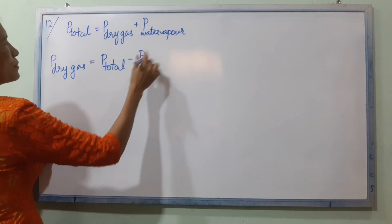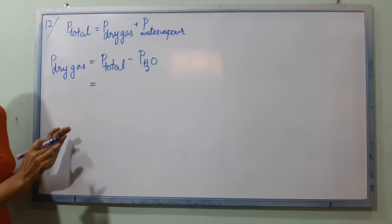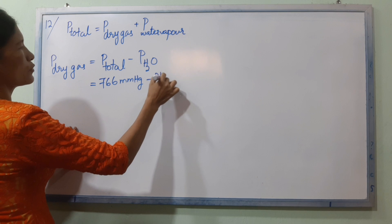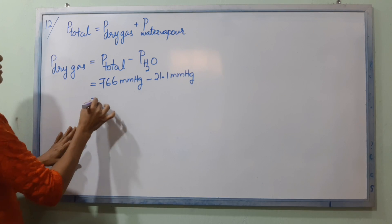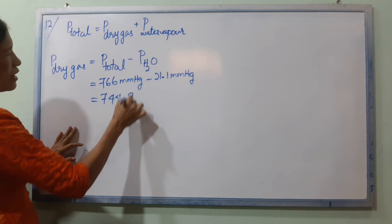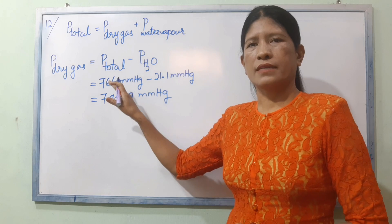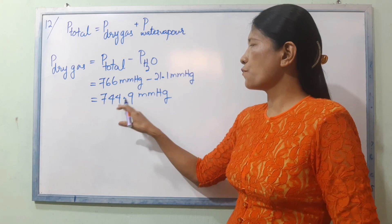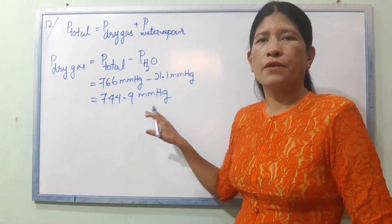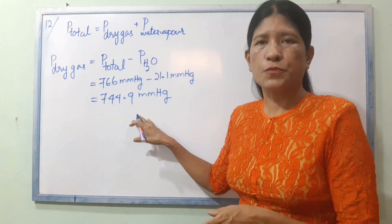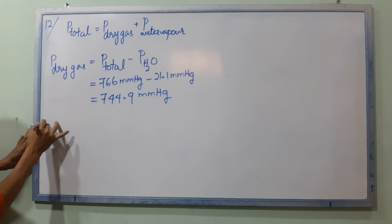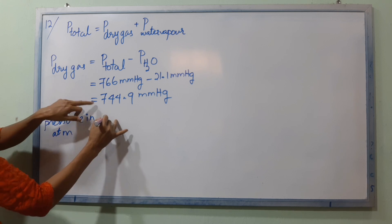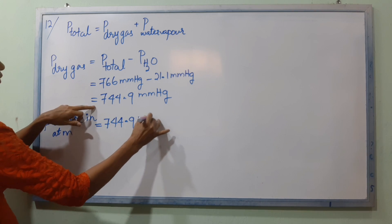The total pressure is 766 mm mercury minus P H₂O which is 21.1 mm mercury, giving a dry gas pressure of 744.9 mm mercury.